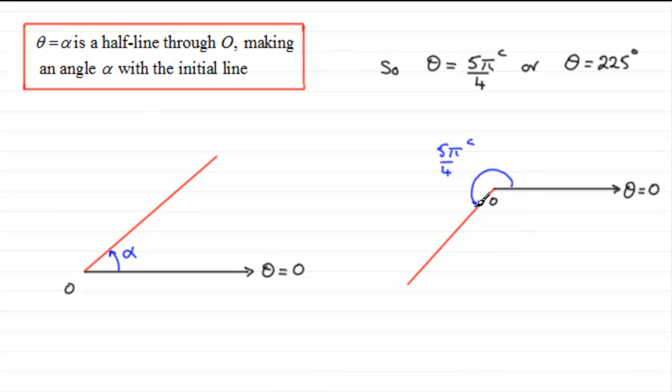Now, this line can also be defined in another way. This half line. We could go round in this direction. If that were the case, we could say theta could be equal to minus 3 quarters pi.